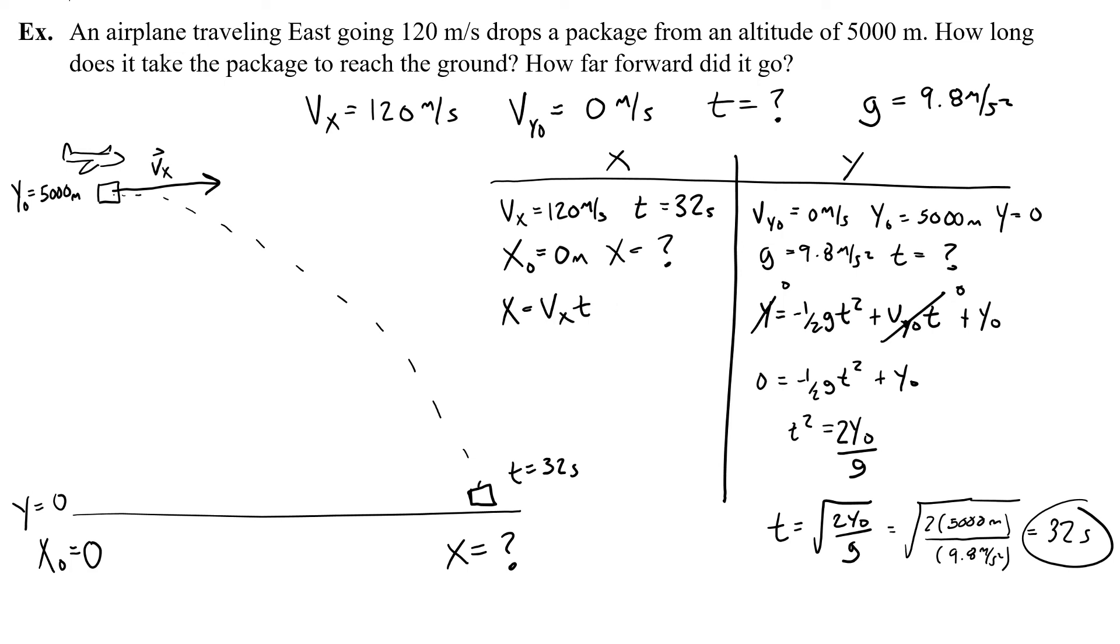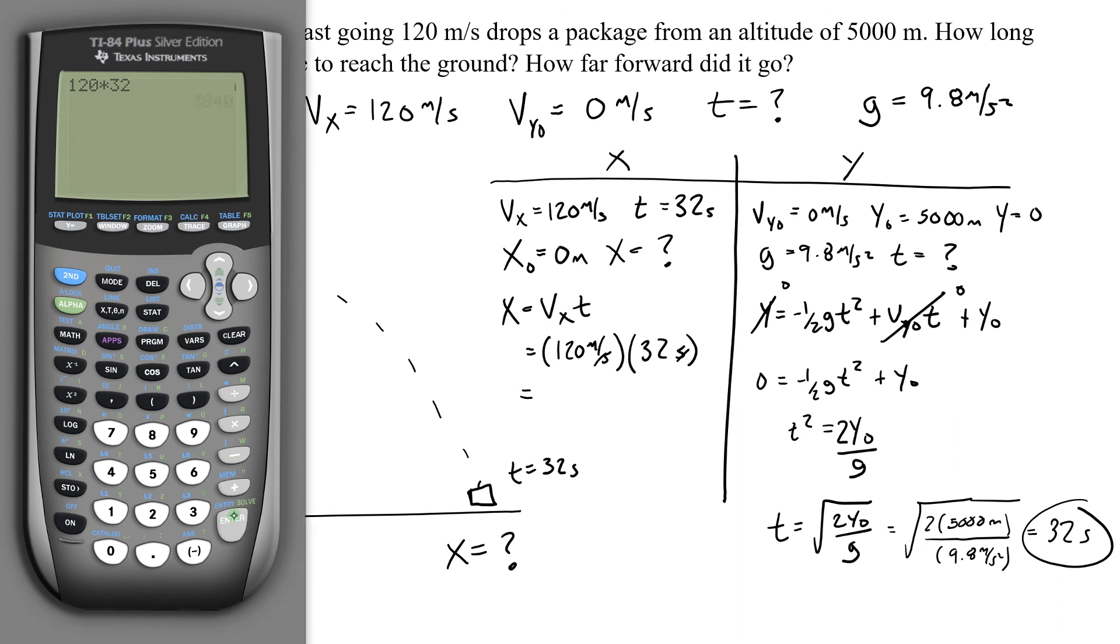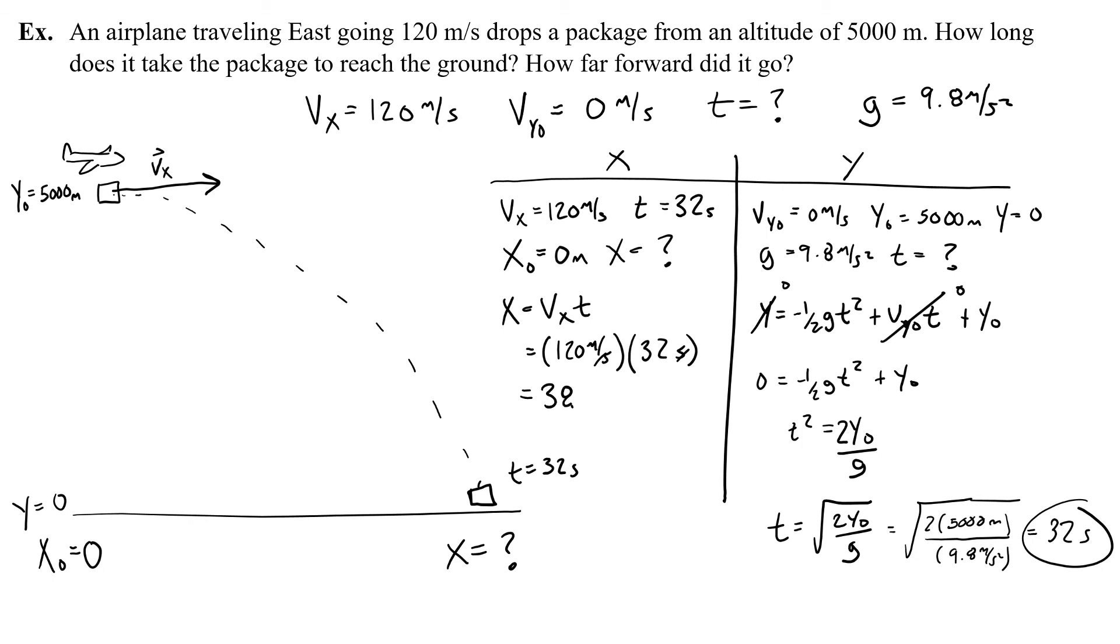Okay, and now finding the x, how far it goes, I just take my 120 and multiply it by 32. So, 120 meters per second times 32 seconds, and the seconds are going to cancel, is going to give me 3840. So, 3840 meters is how far forward the package lands.